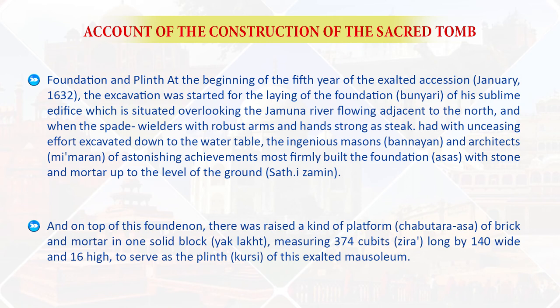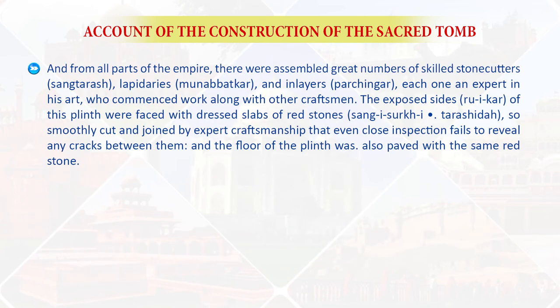And on the top of this foundation, there was raised a kind of platform of brick and mortar in one solid block, measuring 374 cubits long by 140 wide and 16 cubits high, to serve as the plinth of this exalted mausoleum. And from all parts of the empire, there were assembled great numbers of skilled stonecutters, lapidaries, and inlayers, each one an expert in his art, who commenced work along with other craftsmen. The exposed sides of this plinth were faced with dressed slabs of red sandstone, so smoothly cut and joined by expert craftsmanship that even close inspection fails to reveal any cracks between them. And the floor of the plinth was also paved with the same red stone.